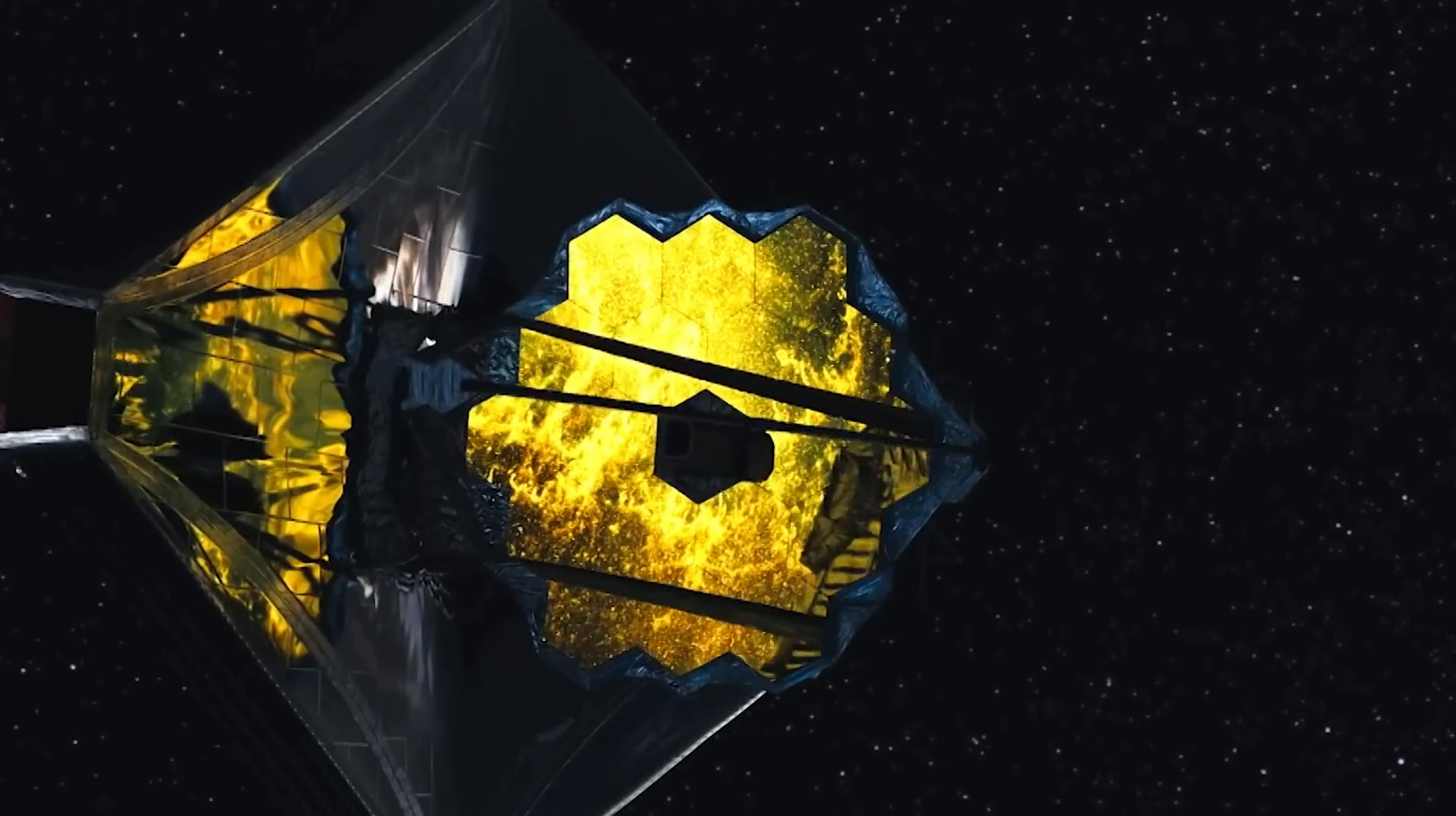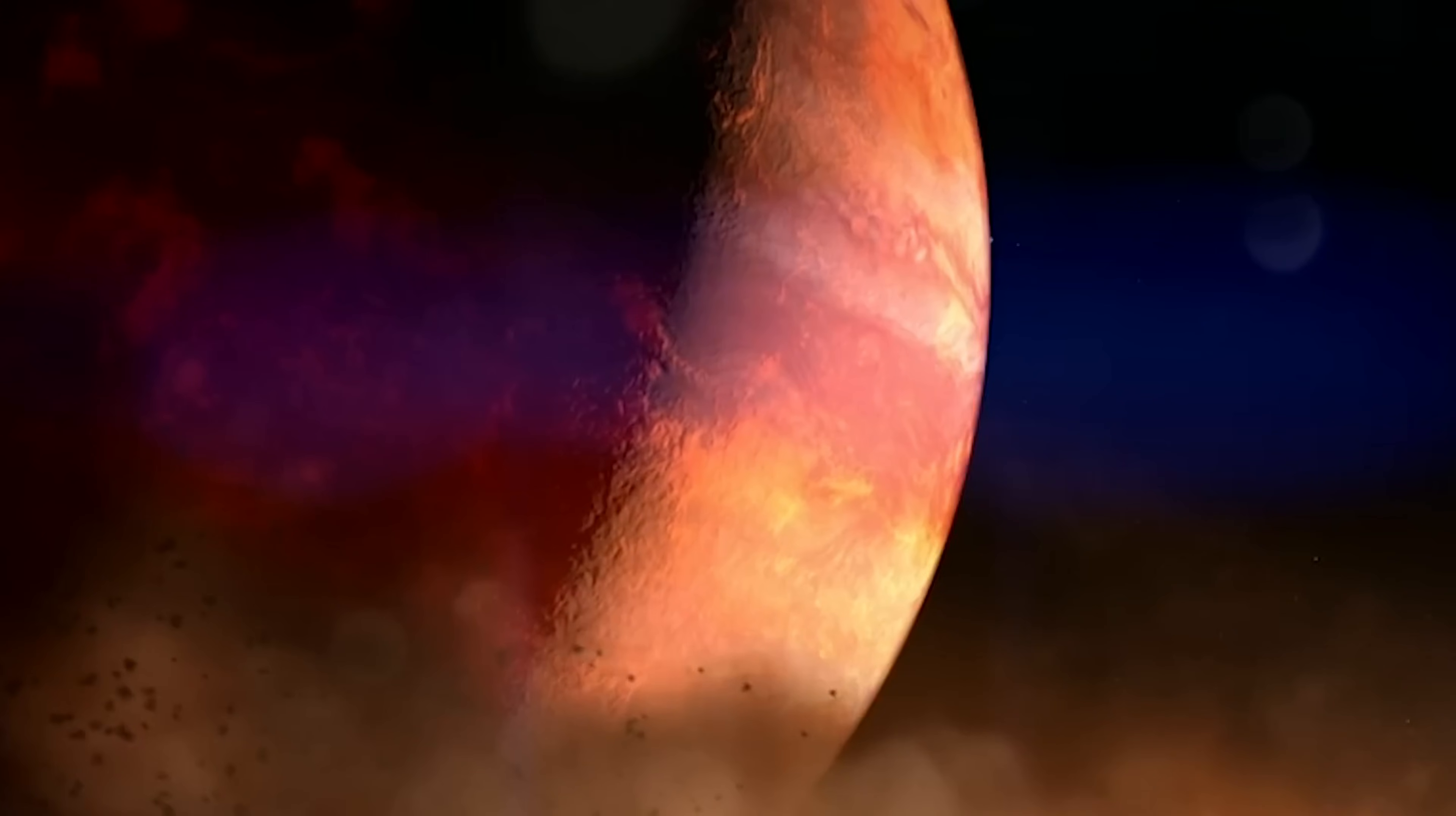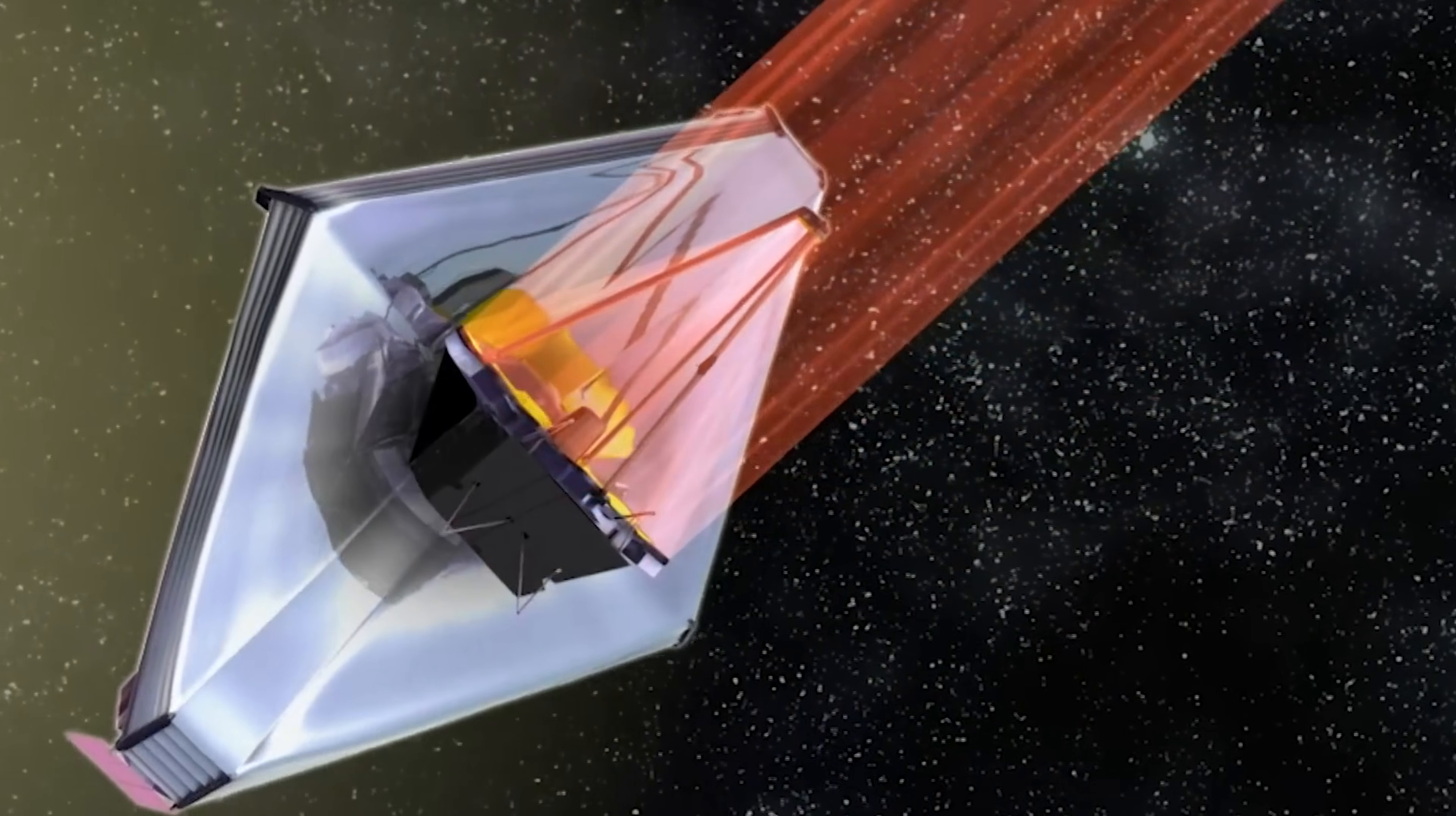One of the most exciting moments in the panel discussion was when experts analyzed the images of the exoplanet WASP-96B, a gas giant located about 1,150 light-years away. Webb's ability to analyze the planet's atmosphere using its infrared instruments provided scientists with valuable data on its composition.